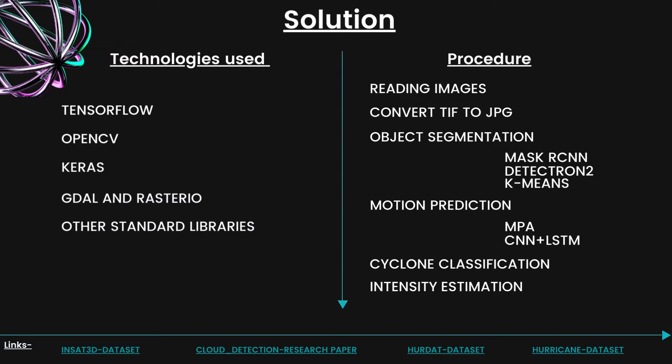Our solution methodology goes as follows. We first read the images — from the INSAT 3D dataset in TIFF format, which we convert to JPEG. There are 45 images in total. Then we perform object segmentation using three algorithms: Mask RCNN, Detectron2, and K-means. Further, we have motion prediction using two algorithms: MPA (mean path adjustment) and CNN plus LSTM. Finally, we perform cyclone classification and intensity estimation.